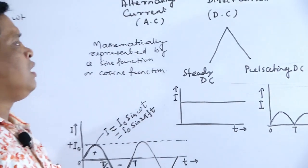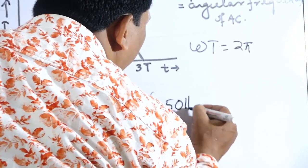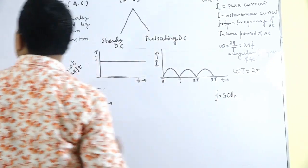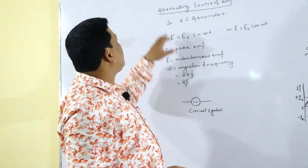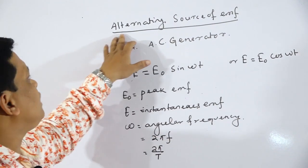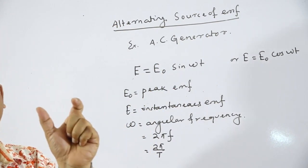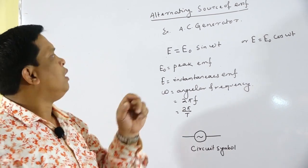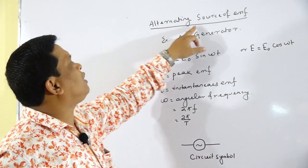In our country, the alternating current has a frequency F equal to 50 hertz. We can get alternating current from an alternating source of EMF — electromotive force. A battery or a cell is the DC source of EMF, but an AC generator is a source of alternating EMF, meaning we can get alternating current from an AC generator.